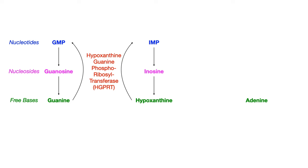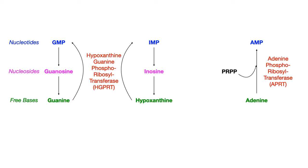As you'll see in just a few slides, that enzyme is also very clinically relevant because if there's a problem with it, we get a certain disease. Looking at the right side of this slide, we also have the free base adenine. Adenine can combine with PRPP and will become the nucleotide AMP. The enzyme that converts adenine back into AMP to recycle it is APRT, which stands for adenine phosphoribosyl transferase. The purpose or goal of purine salvage is to salvage — meaning to break down and reutilize components of — the free bases guanine, hypoxanthine, and adenine.